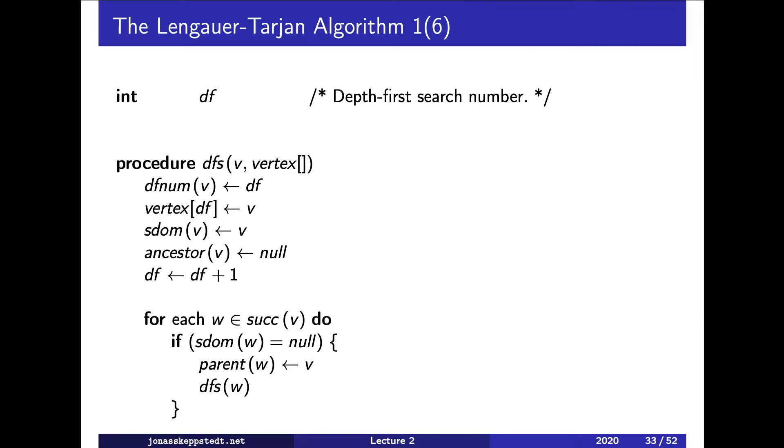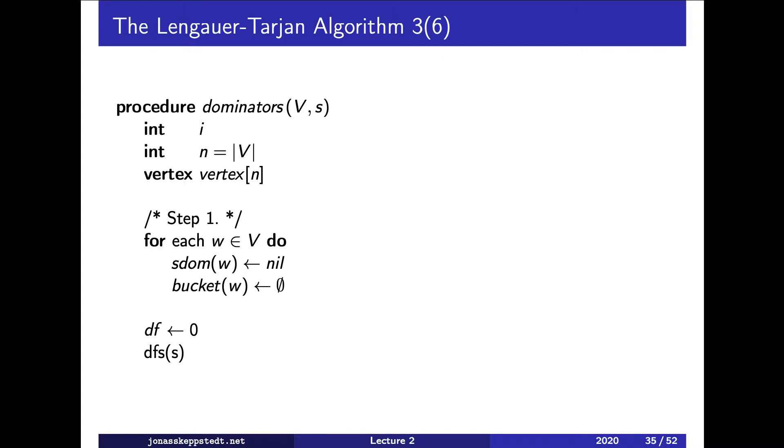We do not start here but we start here. So we have the control flow graph v and the start vertex s, and this array vertex contains pointers to vertices.